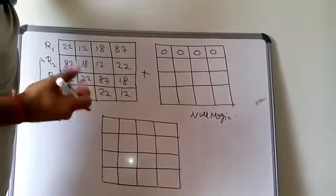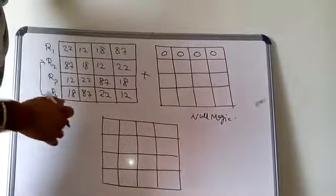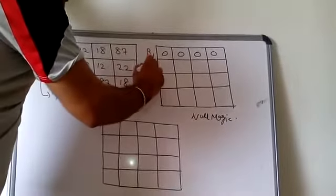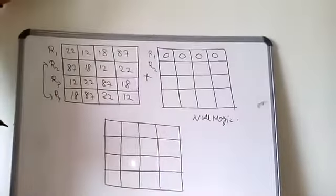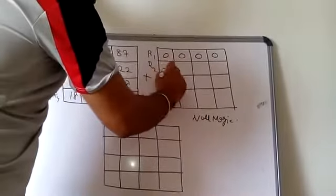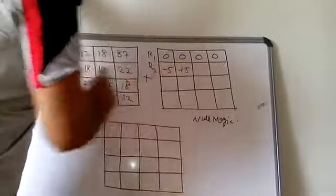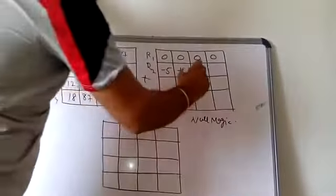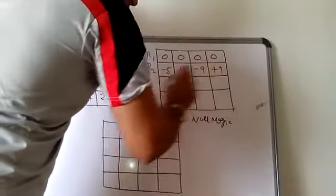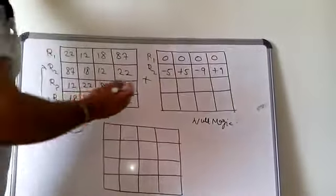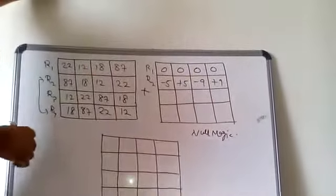Now, this is row number 1 and I will see row number 2. So row number 2 is minus 5 plus 5, then minus 9 and plus 9. This is row number 2 because the total is 0, that is again 0.